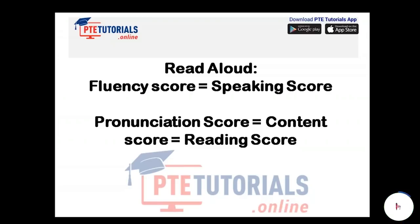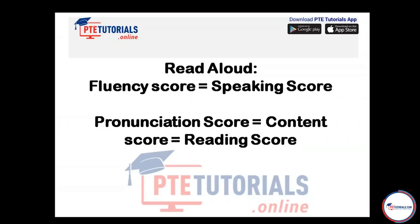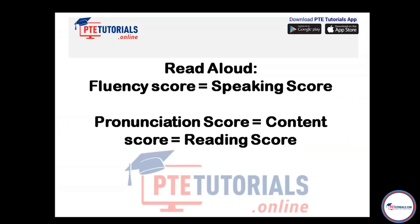Five marks we get for fluency and five marks for pronunciation. The content score added to your reading is actually hidden — no one knows exactly how many words you will get in one paragraph of read aloud; it can be 50 words or 40 words. Also, if you get difficult words in a read aloud, the percentile going to your reading score will be higher. The more difficult the read aloud, the more percentile is there. If you have very easy words, the contribution to your reading module will be less.